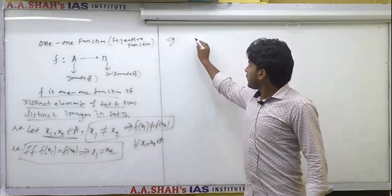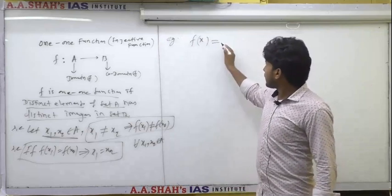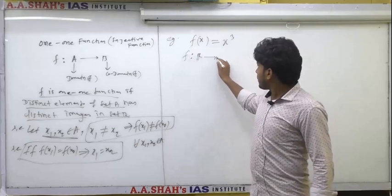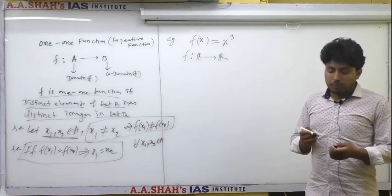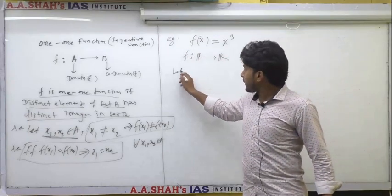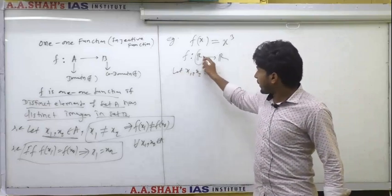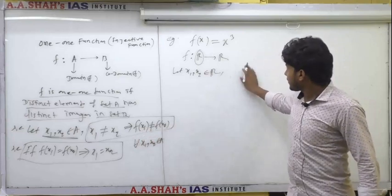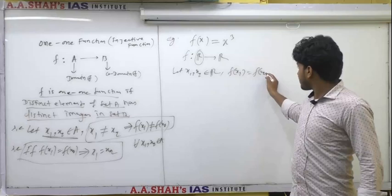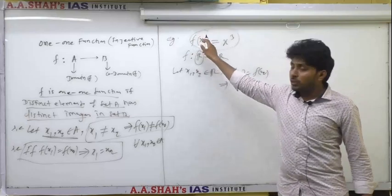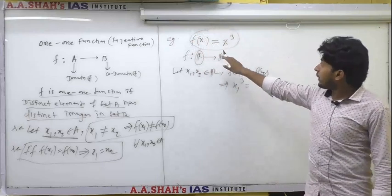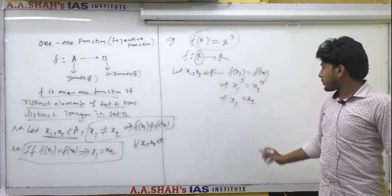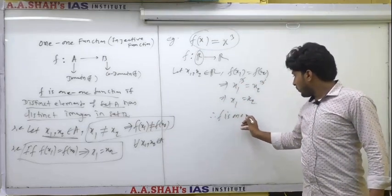For example, take f(x) = x³ where f is from ℝ to ℝ. To prove this function is one-one, we use the second definition: let f(x1) = f(x2). Then x1³ = x2³, and we can cancel the power, so x1 = x2. Therefore f is a one-one function.